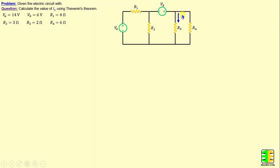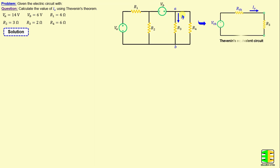Let's move on to the solution by applying Thevenin's Theorem between terminals A and B. We can replace this circuit with a voltage source in series with a resistor, which will be denoted as Vth and Rth. In our example, Rth is connected in series with R3, which plays the role of the load.